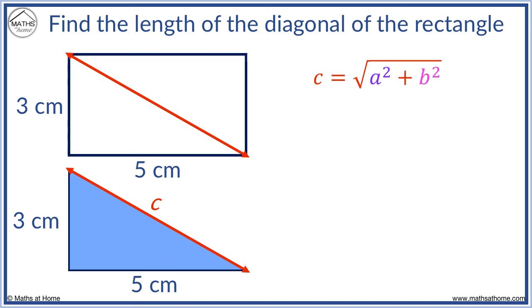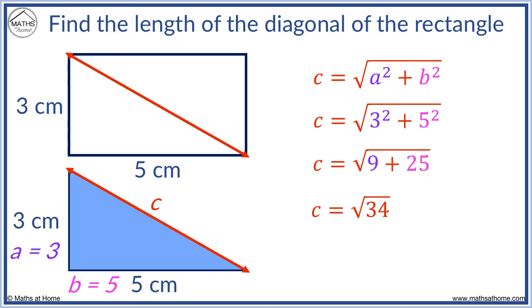c equals the square root of a squared plus b squared. a and b are the two other side lengths. Here a is 3 and b is 5. We enter these values into our formula. 3 squared equals 9 and 5 squared equals 25. 9 plus 25 equals 34, and so the length of the diagonal is the square root of 34. This is approximately 5.83 centimeters.